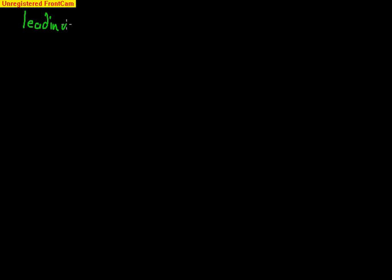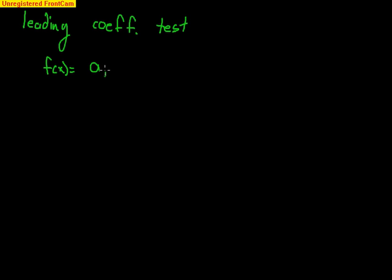We can learn an awful lot from polynomial functions. One important thing we do is what's called the leading coefficient test. The leading coefficient and the degree tell an awful lot. Remember that very first coefficient, a sub 1, with x to the n — it's not always going to come first, but you've got to look at what coefficient is with the largest exponent. So n is your degree, and a sub 1 is your leading coefficient.